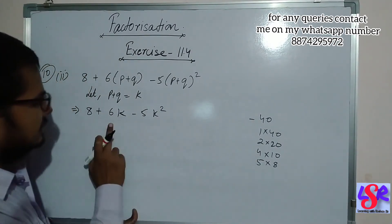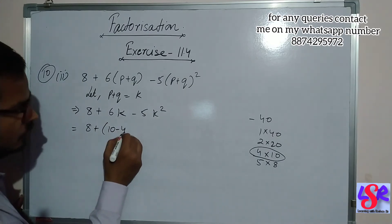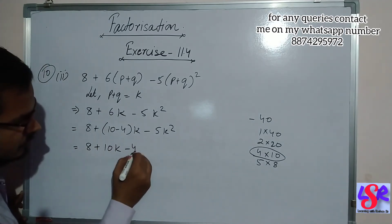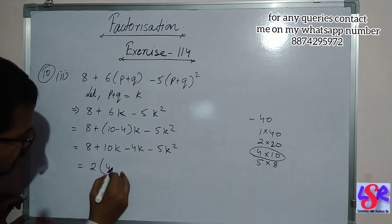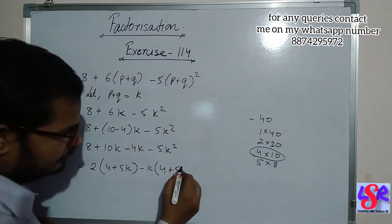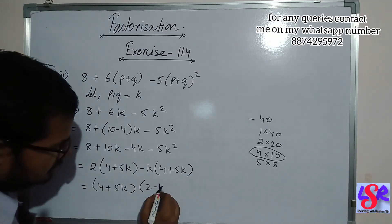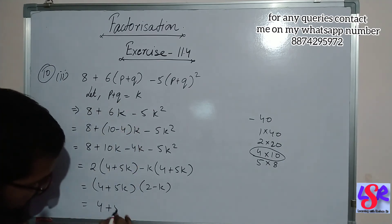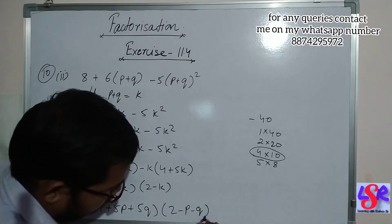We subtract two factors to get 6, and we take 4 and 10 since 10 minus 4 is 6. So this becomes 8 plus 10k minus 4k minus 5k square. Taking 2 common from the first two gives 4 plus 5k, and taking minus k common from the last two also gives 4 plus 5k. Taking 4 plus 5k as common gives 2 minus k. Substituting back k equals p plus q, the answer is 4 plus 5p plus 5q into 2 minus p minus q.